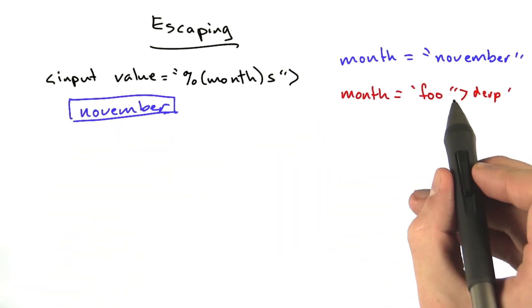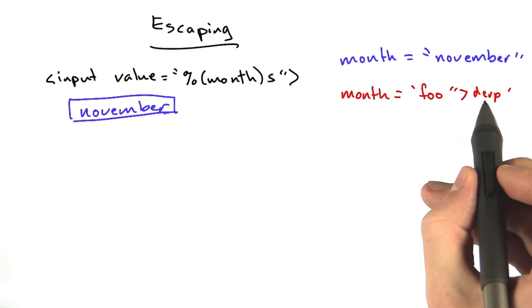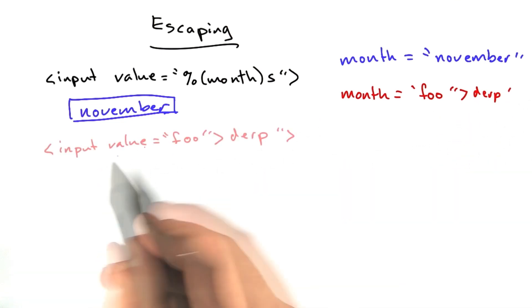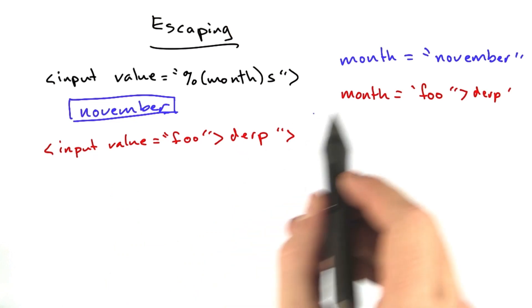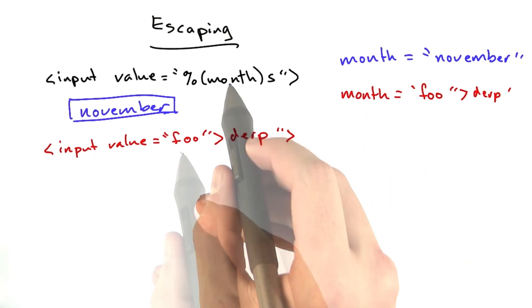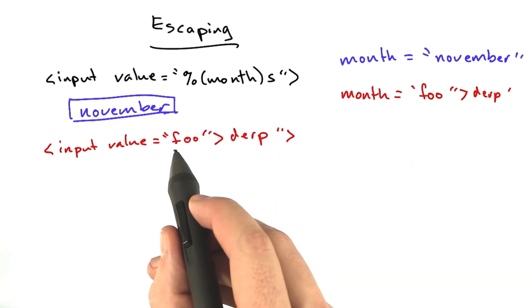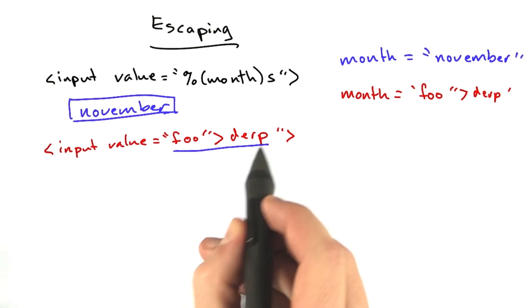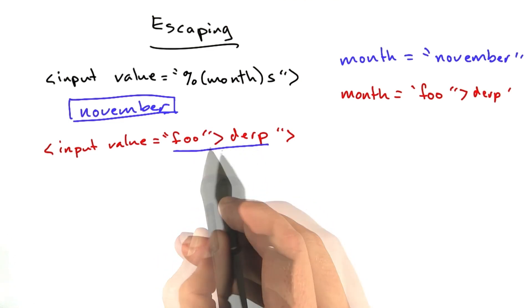But if month equals the string foo with a quote in it and an angle bracket and some more text, the string render ends up looking something like this where we substitute this variable into here because the value for month was actually this whole string, including the quote and the angle bracket, which screwed up our HTML.